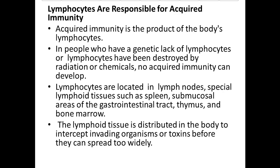Lymphocytes are responsible for acquired immunity. Acquired immunity is the product of the body's lymphocytes. In people who have a genetic lack of lymphocytes, or whose lymphocytes have been destroyed by radiation or chemicals, no acquired immunity can develop. Lymphocytes are located in lymph nodes, the spleen, submucosal areas of the gastrointestinal tract, the thymus, and bone marrow. Lymphoid tissue is distributed throughout the body to intercept invading organisms or toxins.